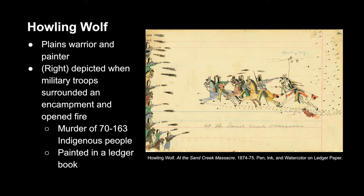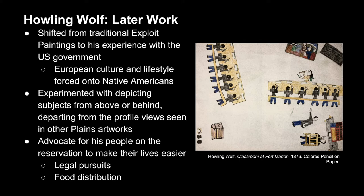Howling Wolf's later work shifted from traditional exploit paintings to more of his personal experience with the US government. Here we see a depiction of Fort Marion, which is where Howling Wolf was imprisoned. He and several hundred other warriors were there as part of an experiment, during which they cut their hair — which had spiritual and cultural meaning for them — put them in western clothing, and gave them Christian names. Traditionally, Plains artists depict their subjects in profile only, but in Howling Wolf's later works we see that he diverges from that, depicting his subjects from above or behind. This perspectival experimentation is just more evidence of western influence.